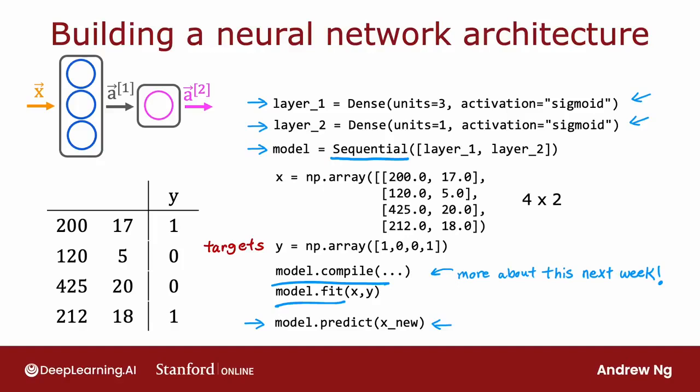Now, I want to take these three lines of code on top and just simplify it a little bit further, which is when coding in TensorFlow, by convention, we don't explicitly assign the two layers to two variables, layer one and layer two, as follows. But by convention,